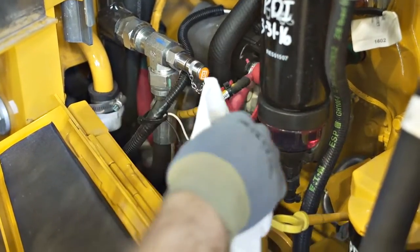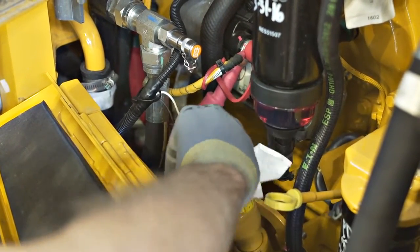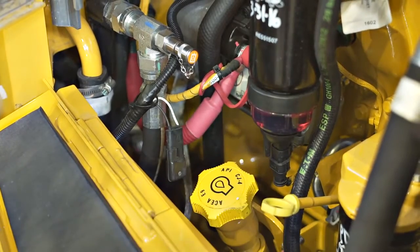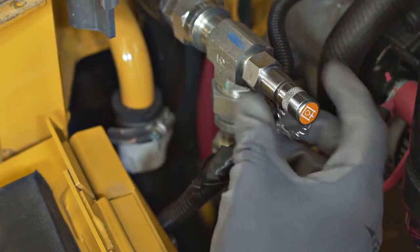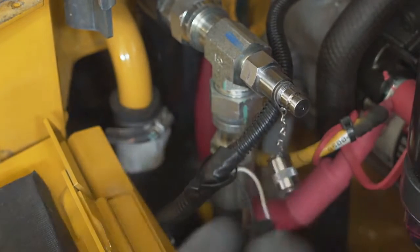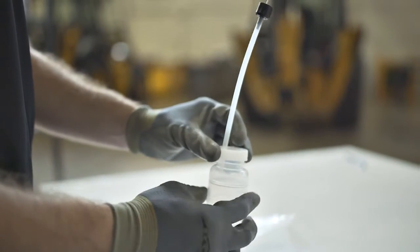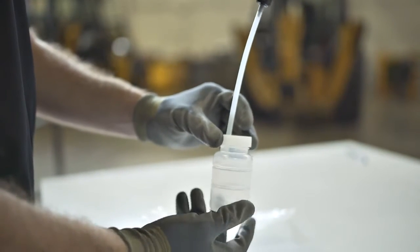Locate the sample valve on the unit and clean the area around the valve prior to removing the dust cap. This will reduce additional sample contamination. Once the area has been cleaned, remove the dust cap from the valve. Shop rags can generate and deposit fiber and lint. Ensure that the sample bottle is clean and free of any moisture before obtaining the sample.